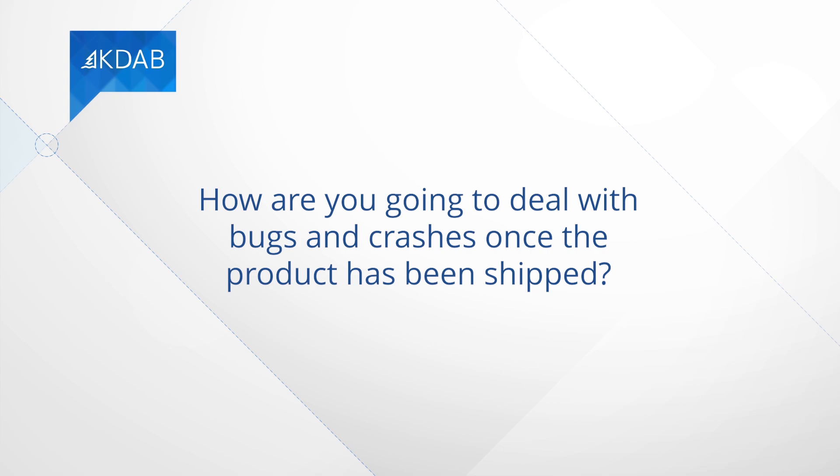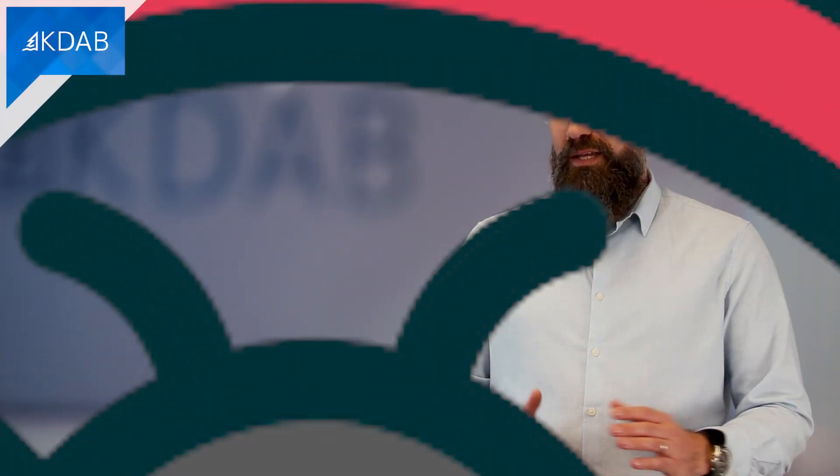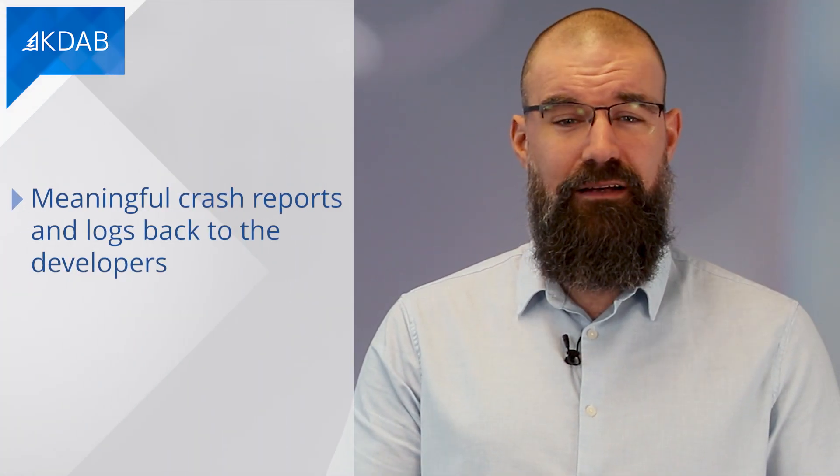The last question I want to ask in this episode is how are you going to deal with bugs and crashes once the product has been shipped? Obviously, in an ideal world, there wouldn't be any. But the reality is that customers are always going to find a way to break your product. Successful products will have a way to get meaningful crash reports and logs back to the developers. By considering and implementing this process early on, you can reduce the developer time spent trying to reproduce bugs found during testing. And remember, testing is not always going to be performed by developers with debuggers attached. You will likely have test products in the hands of key stakeholders, and just like your customers, when they find an issue, you can't rely on them to provide all the contextual information a developer needs to fix the issue.